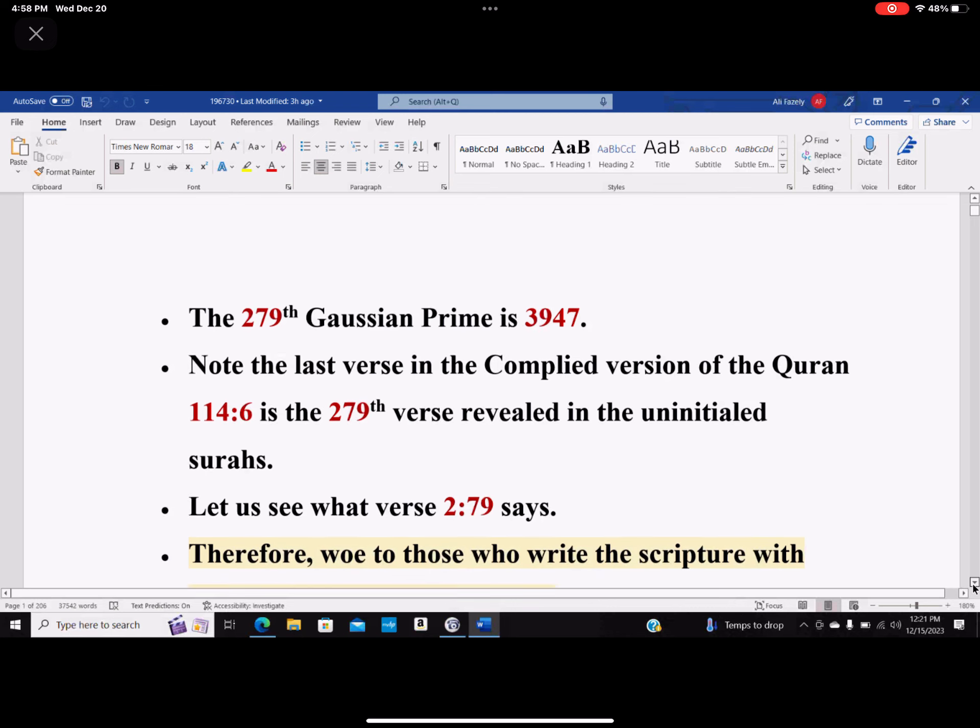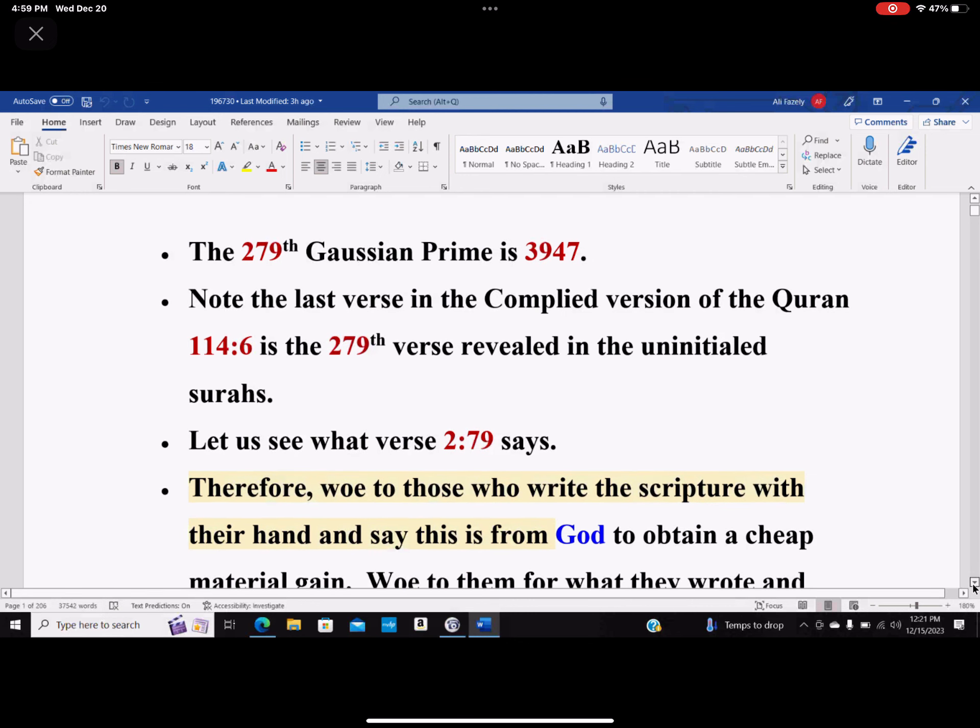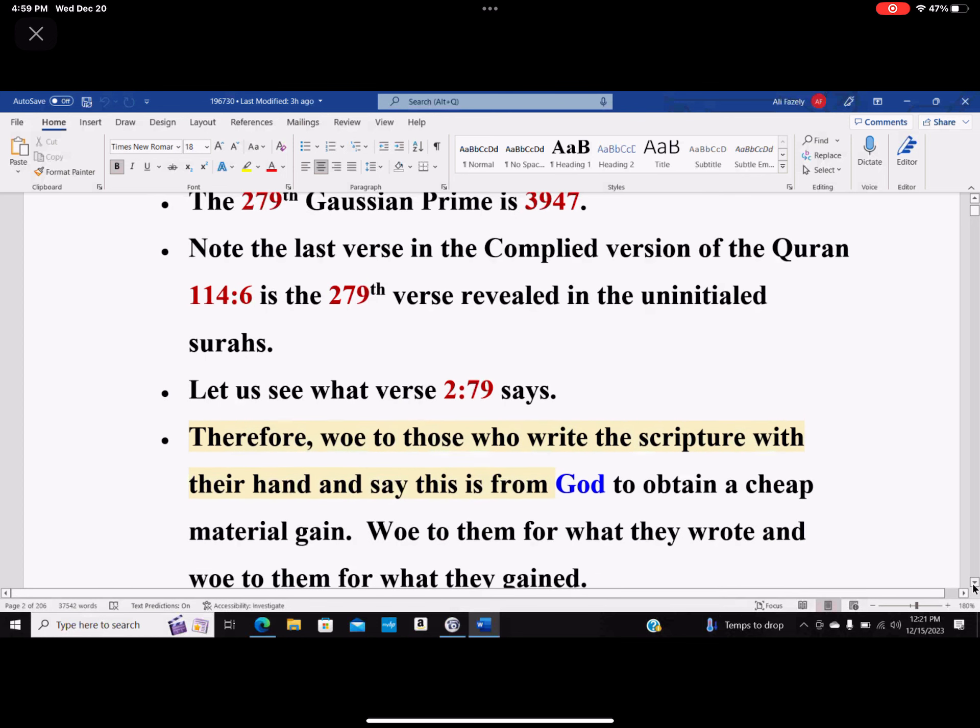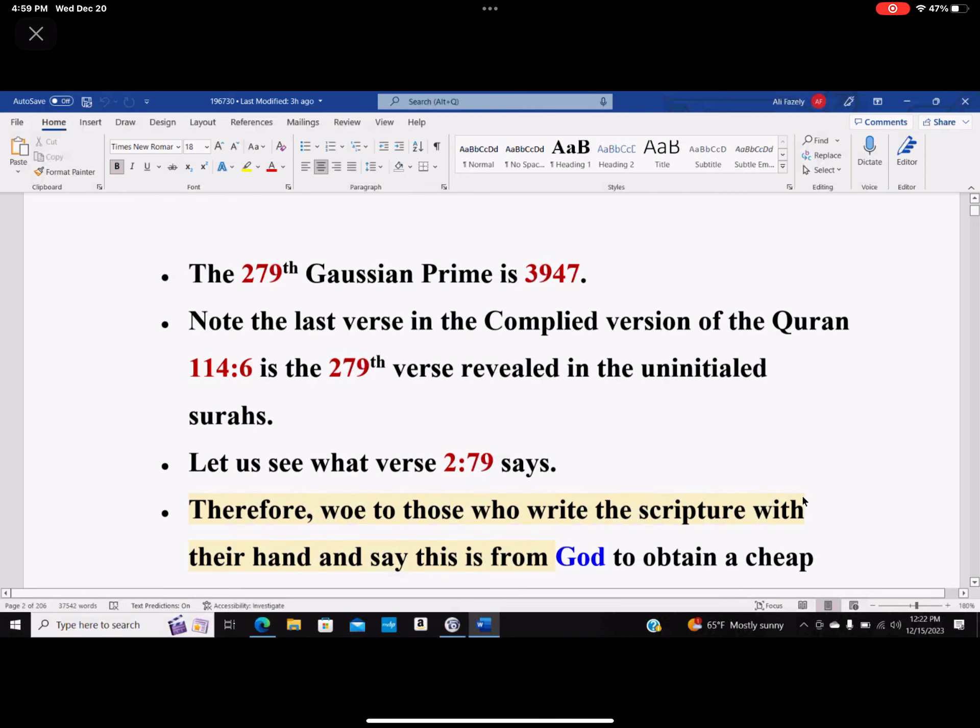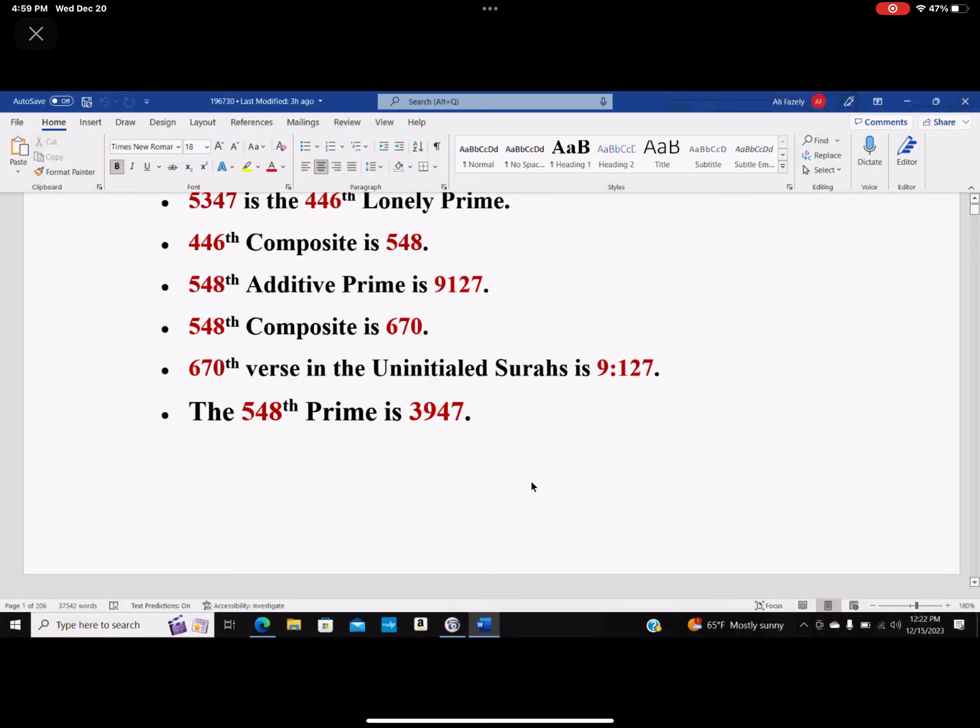Now look at this. Therefore, woe to those who write the scripture with their hand and say this is from God to obtain a cheap material gain. Woe to them for what they wrote, and woe to them for what they gained. Can you imagine that? You see, we know why God says this in 2:79, because of this mathematical structure that it has, because of this 548, which happens to be simultaneously the index of prime 3947. It also happens to be the index of additive prime 9127. So it practically tells you where they actually added two false verses. Is that amazing?